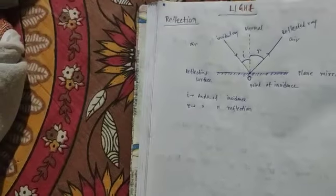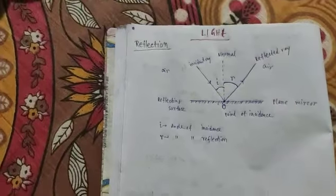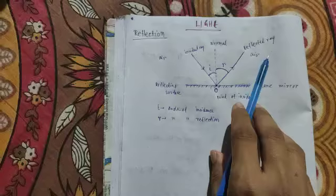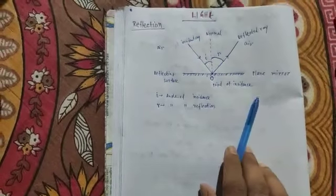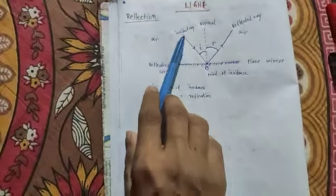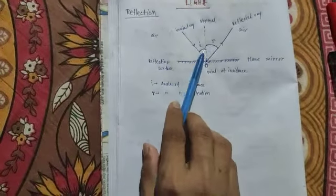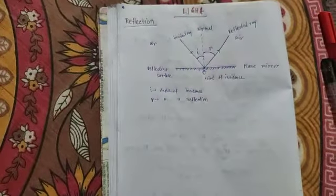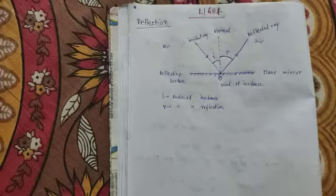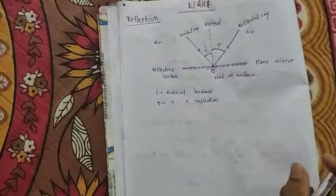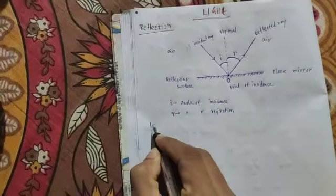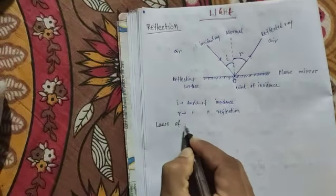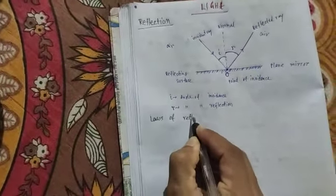All terms are clear: incident ray, reflected ray, point of incidence, normal, angle of incidence, and angle of reflection. Now I will discuss the laws of reflection.